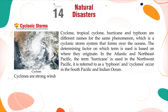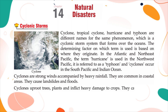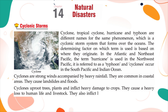Cyclones are strong winds accompanied by heavy rainfall. They are common in coastal areas and cause landslides and floods. Cyclones uproot trees and plants and inflict heavy damage to crops. They cause heavy loss to human life and livestock, and also inflict heavy damage to ships, boats and port infrastructure.